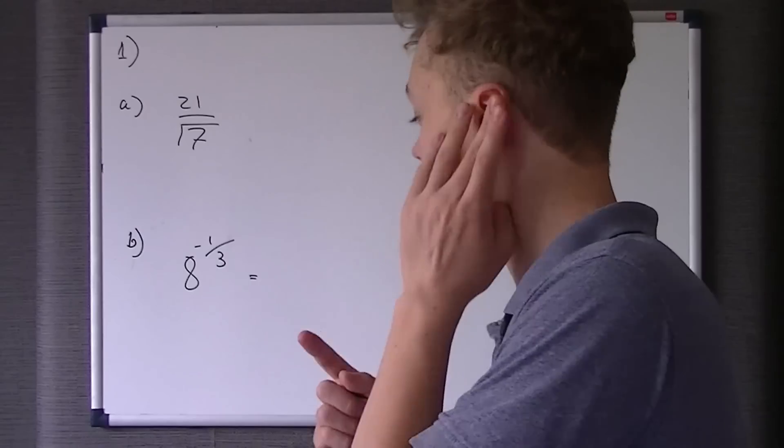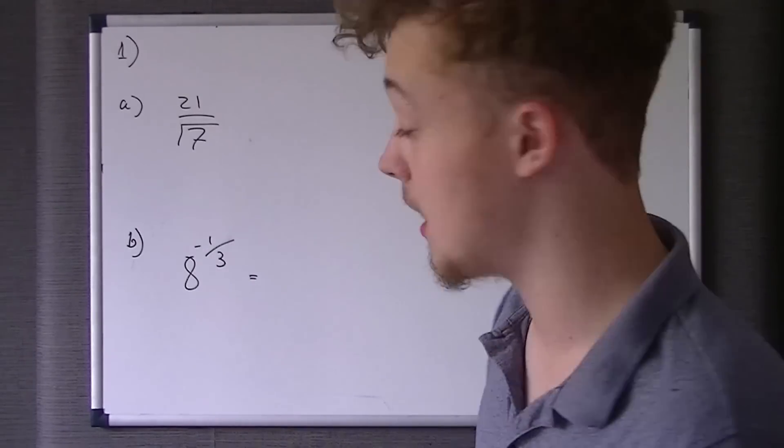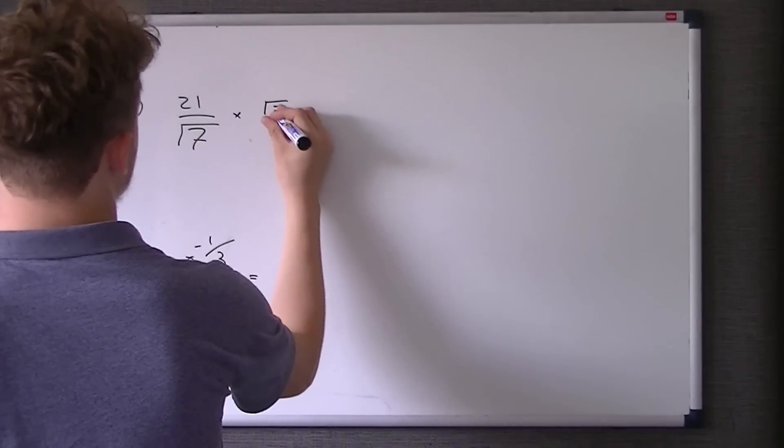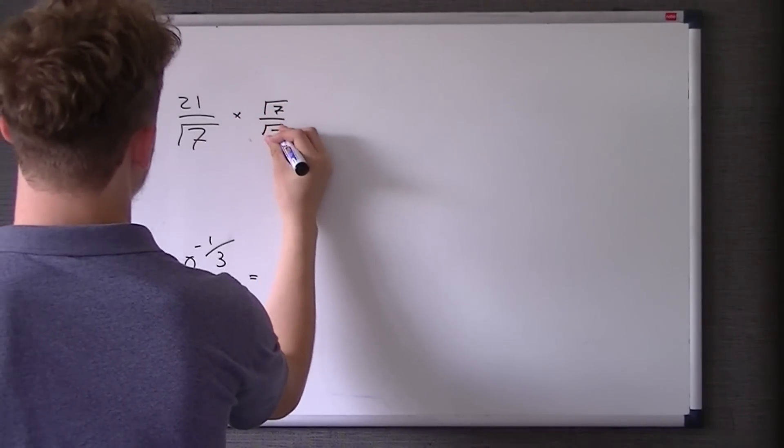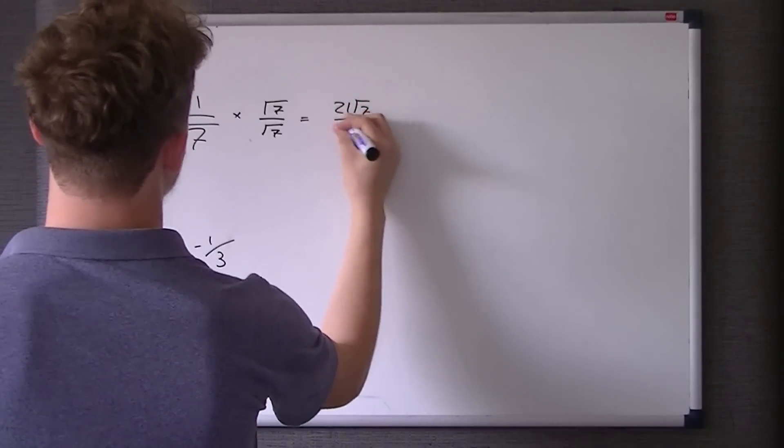So therefore, as it's likely to be some fraction, the root 7 has to be on the bottom. So as we can only times it by 1, we have to times it by root 7 over root 7, which gets us 21 root 7 over 7.